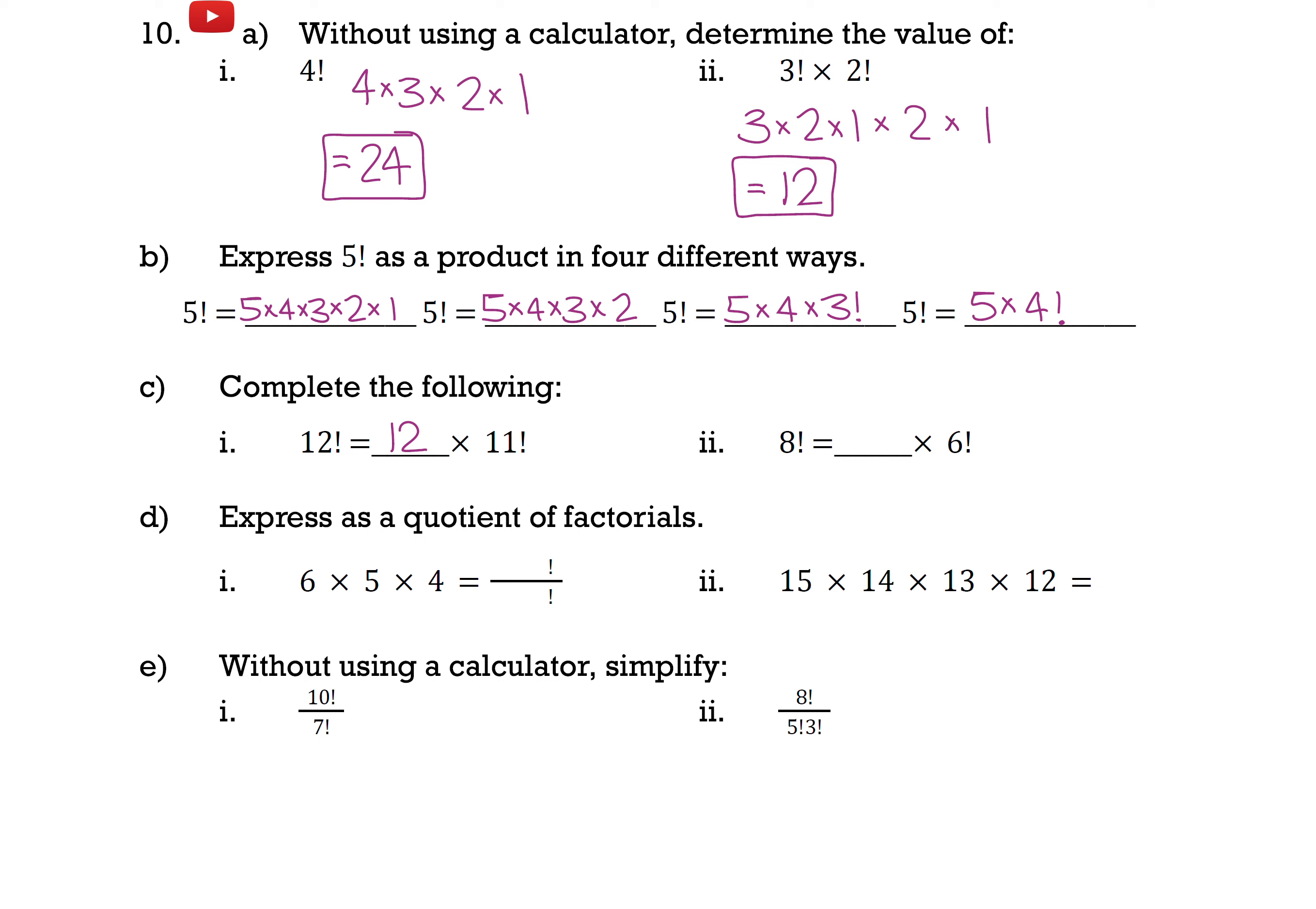And likewise for part 2, 8 factorial would just be 7 times 6 factorial.